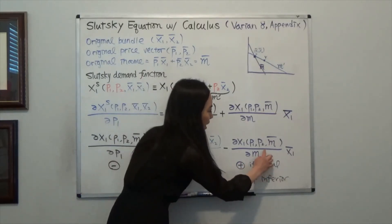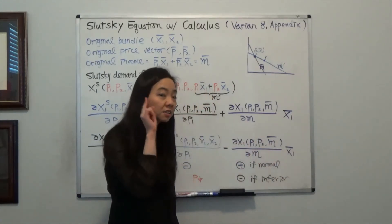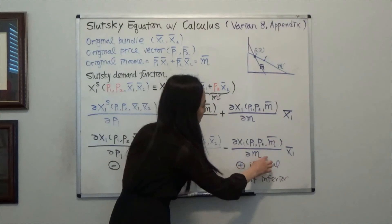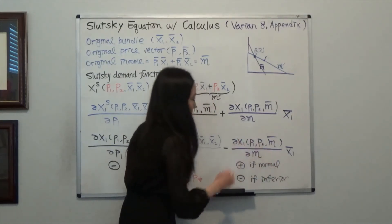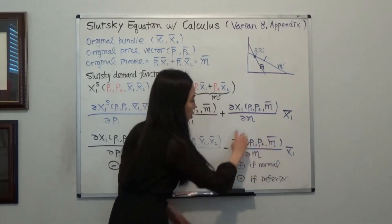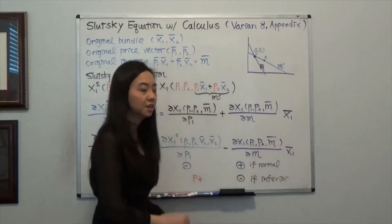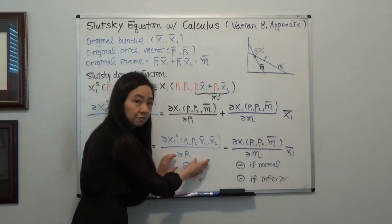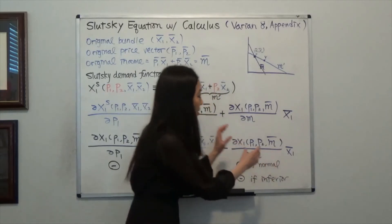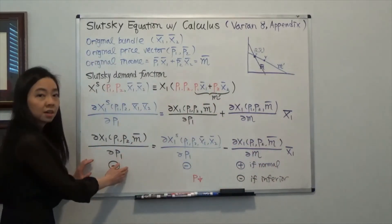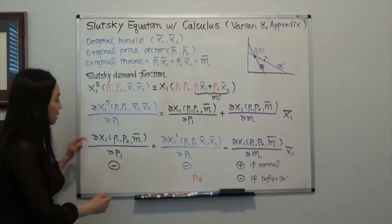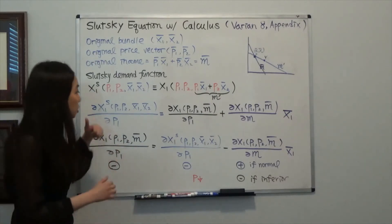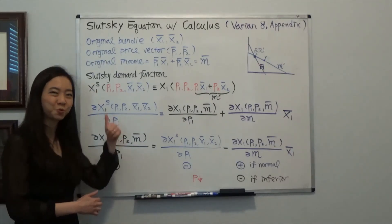So income effect is going to ask you to buy more. So when income goes up, remember, we feel as if our income has gone up, right? So when income goes up, I'm going to buy more. So this term is positive. So you have something negative minus something positive. So the result will be even more negative, meaning when the price of good one goes down, you will definitely buy more good one.